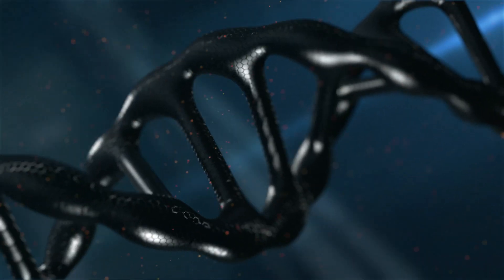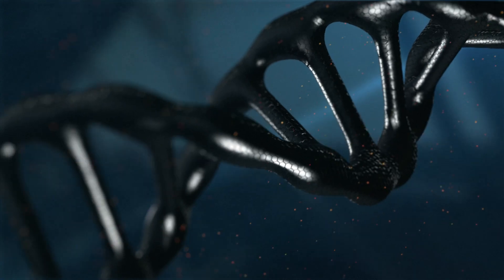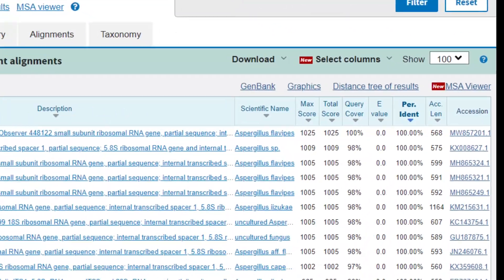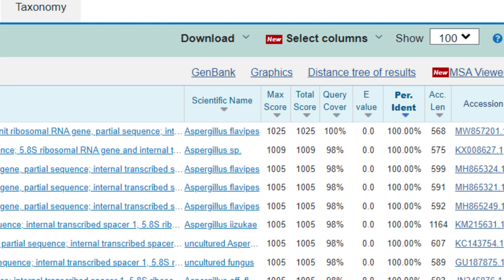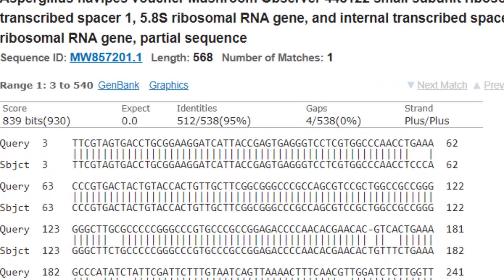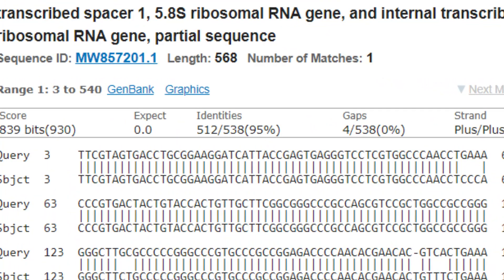This works because this region of DNA is highly conserved. That is, it doesn't change very much over the course of evolution. The more two species are closely related, the more the DNA barcoding sequence will be the same or similar. Conversely, the more distant two species of fungi are, the more sequences will diverge from each other.